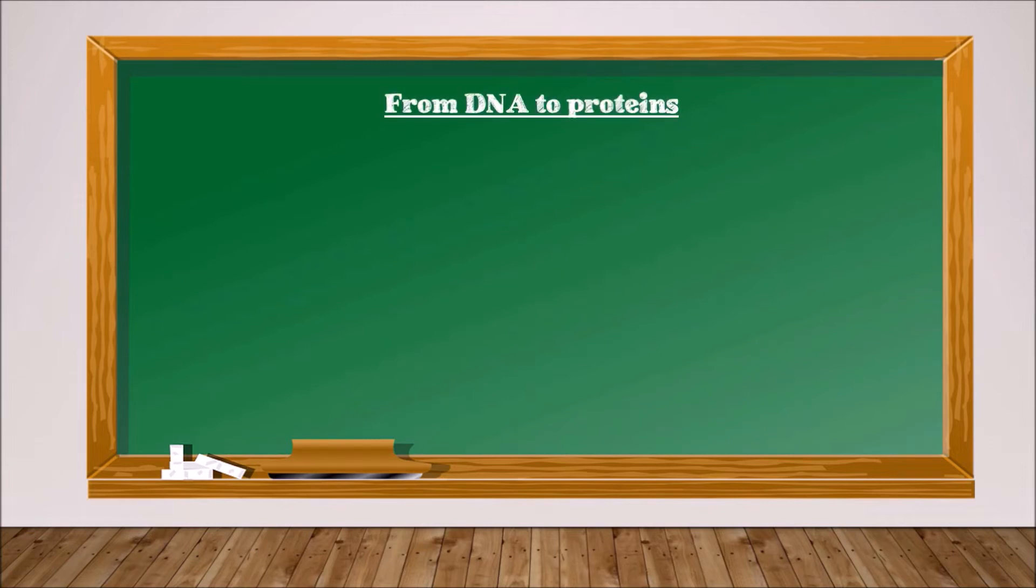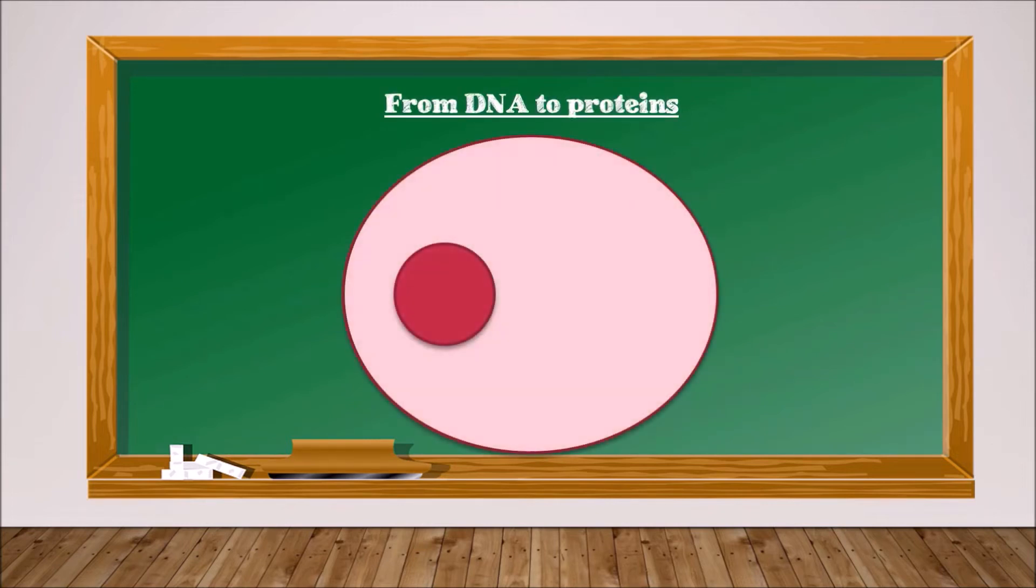Let's start with a eukaryotic cell—that is, a cell with a nucleus. The cell consists of a plasma membrane, a cytoplasm, and a nucleus. Inside the nucleus, we can find the DNA molecule.